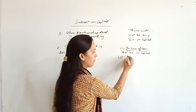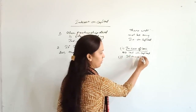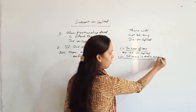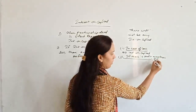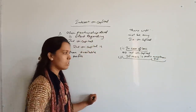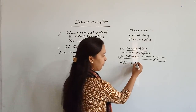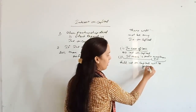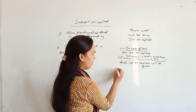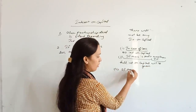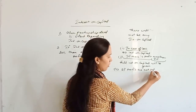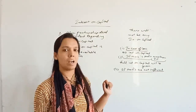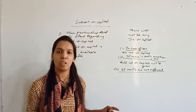Second sub-condition: if there is profit and profits are more than the interest, full interest on capital will be given. Third sub-condition: if profits are not sufficient — for example, interest on capital is 50,000 rupees but profits are only 40,000 — then you will distribute only the available profits among the partners.